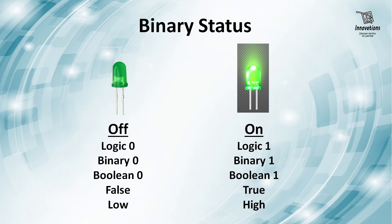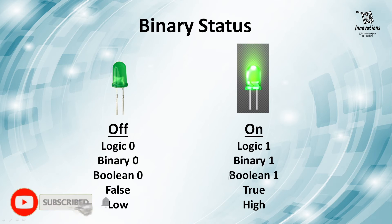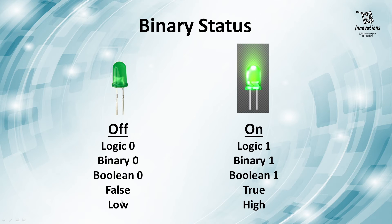When we say output is high or low it can mean different things. A low output can mean: off, logic 0, binary 0, boolean 0, or false. A high output can mean: on, logic 1, binary 1, boolean 1, or true. In our presentation we can use any of these terms to specify the low or off status, and any of these to specify the on or high status.